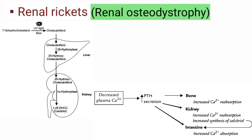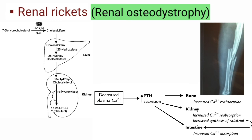Hypocalcemia leads to an increase in PTH (parathyroid hormone) activity, which acts on the bone to increase calcium levels. Consequently, there is excessive bone turnover and structural changes in the bones. Due to mobilization of calcium from the bones, it leads to weak and pliable bones.